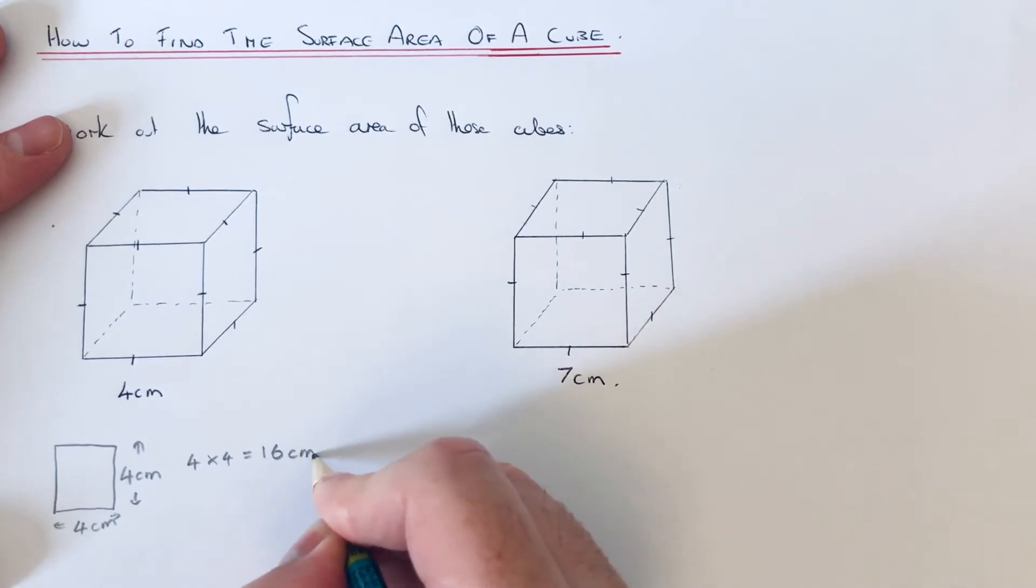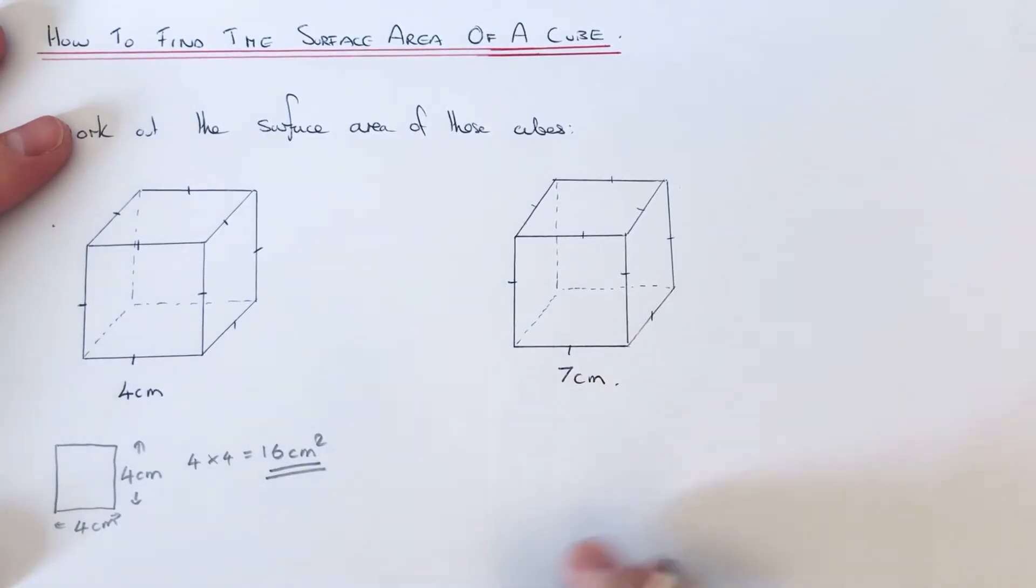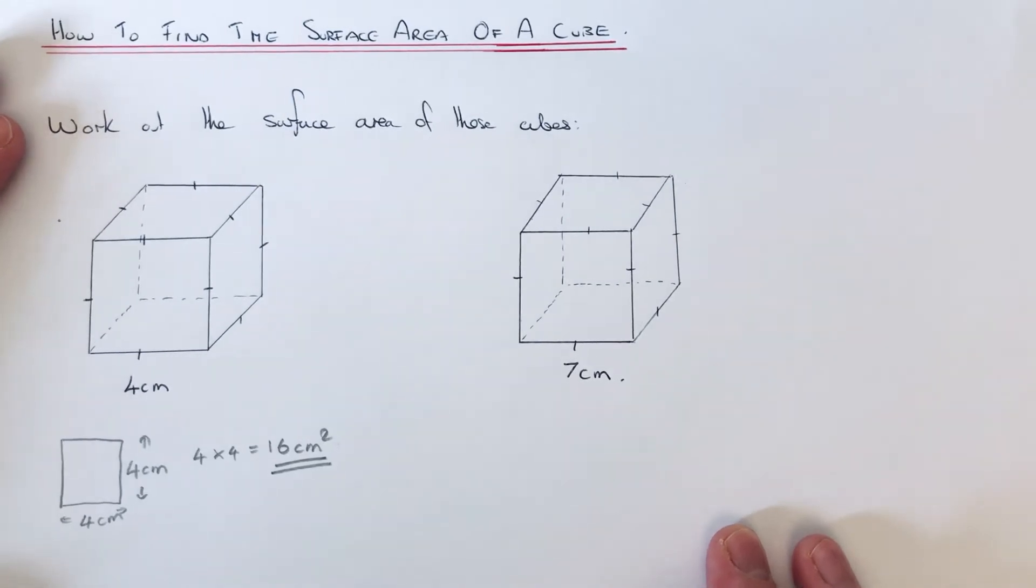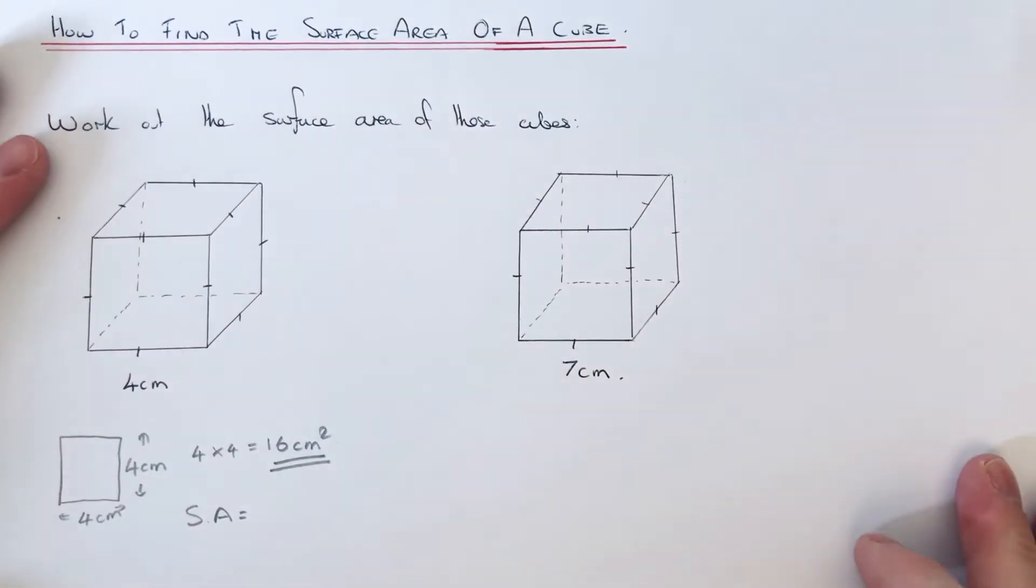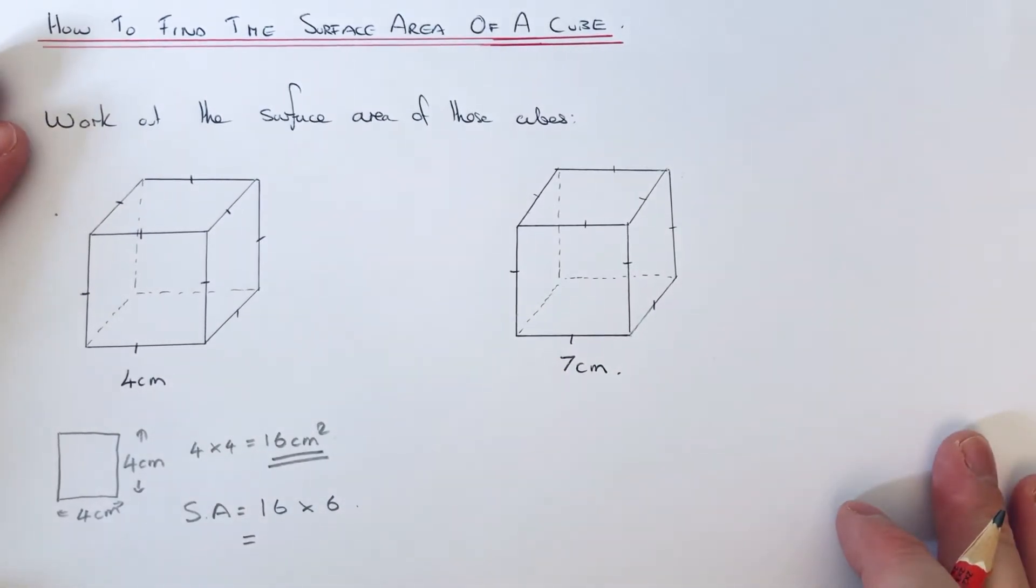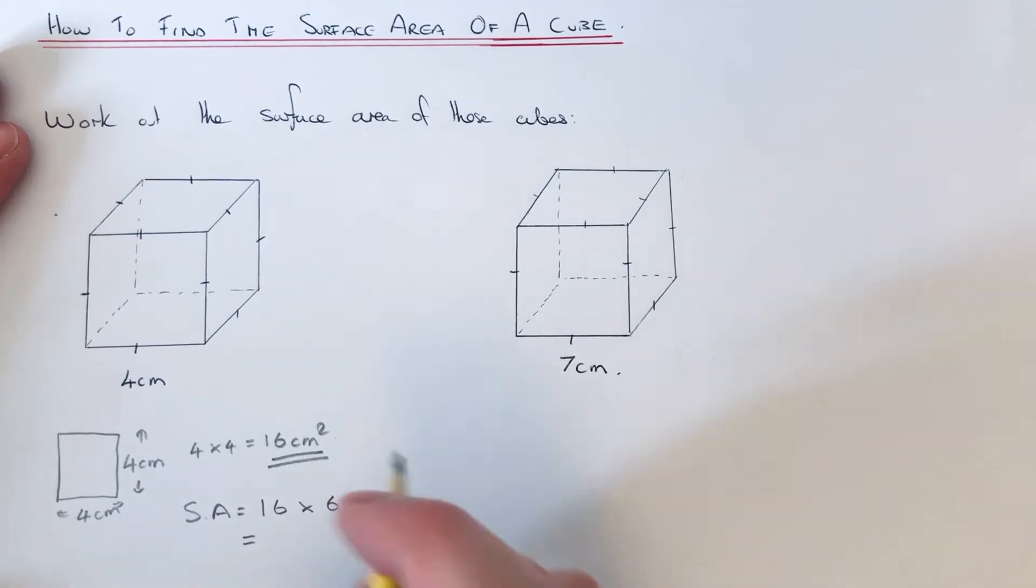...is 16. So our square faces have an area of 16 centimeters squared. To get the surface area, we just need to multiply 16 by 6 because a cube has six square faces. So 16 times 6 will be 96 centimeters squared.